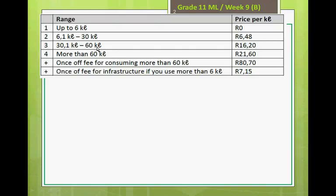If you use more than 30 but less than 60 kilolitres, you will pay 16.20. And if you use more than 60 kilolitres, you will pay 21.60. Then, in addition to what you've already paid, you have a once-off fee for more than 60 kilolitres — that's 18.70, so this is not per kilolitre. And then another once-off fee for the infrastructure if you use more than 6 kilolitres, that's 7.15.